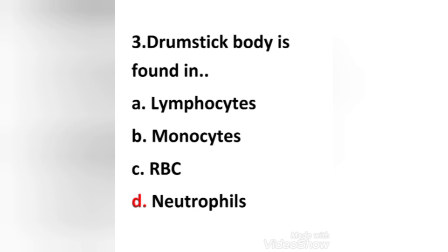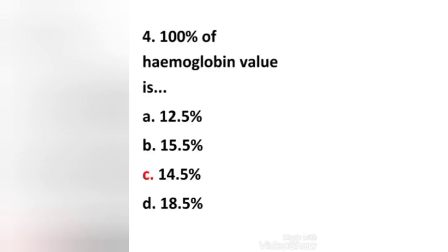Next question: Drumstick body is found in — (a) lymphocytes, (b) monocytes, (c) RBC, (d) neutrophils. The right answer is option D: neutrophils. Drumstick body is found in neutrophils. A drumstick consists of a small nuclear mass about 1.5 micrometers in diameter, attached to the body of the nucleus by means of a thin filament. Drumsticks may occur in any of the three types of polymorphonuclear leukocytes.